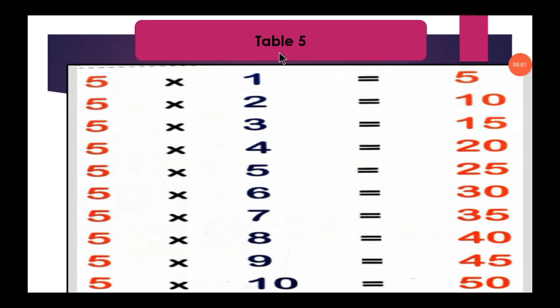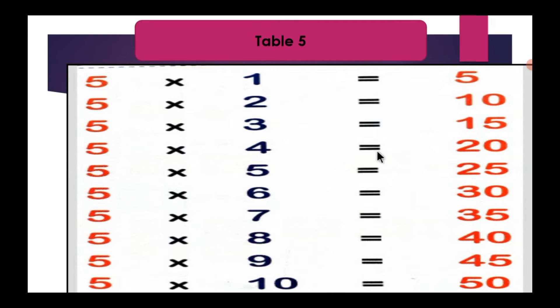Table 5. 5 ones are 5, 5 twos are 10, 5 threes are 15, 5 fours are 20, 5 fives are 25.